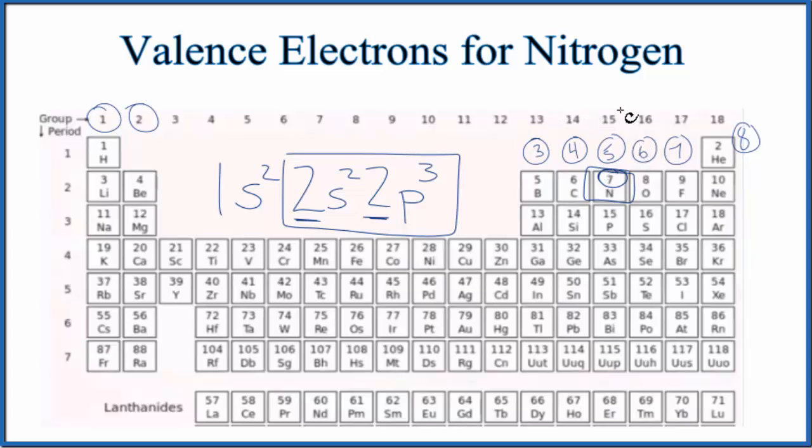So that's how you find the number of valence electrons for the nitrogen atom. This is Dr. B, and thanks for watchin'.